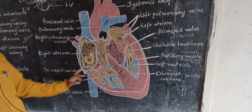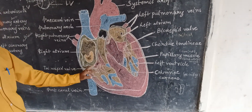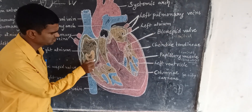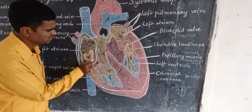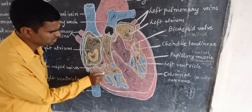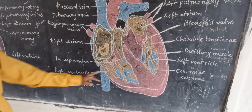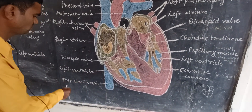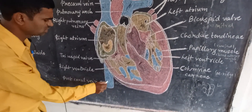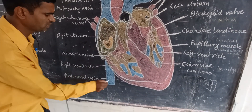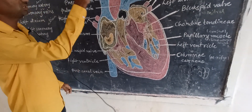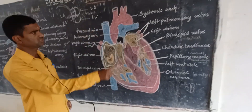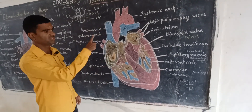Tricuspid valves are forming; through the tricuspid valves, blood is pumped from the right atrium into the right ventricle. This is the postcaval vein. So this is the overall internal structure of the heart.